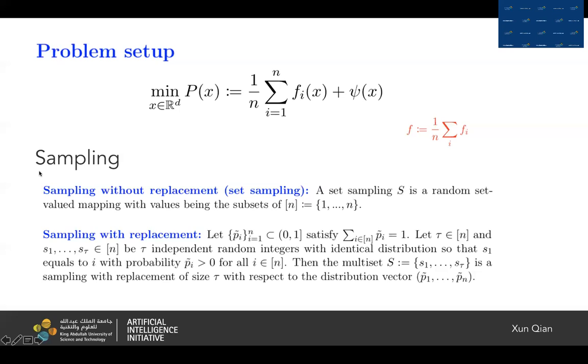We briefly introduce sampling. There are mainly two types of sampling. One type of sampling is that we pick up one sample fi randomly and we do not place it back. We pick up another sample from the rest. We repeat this process and what we finally get is actually a subset. We call it sampling without replacement or set sampling.